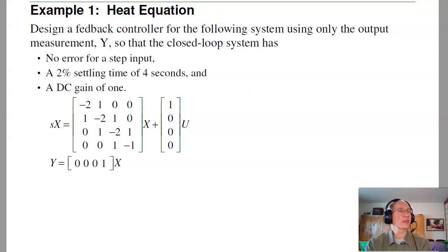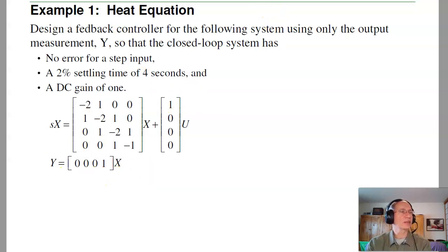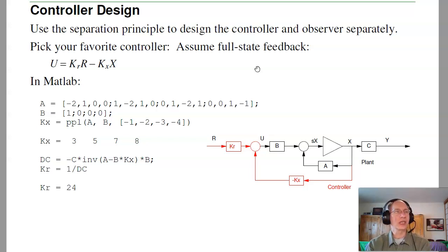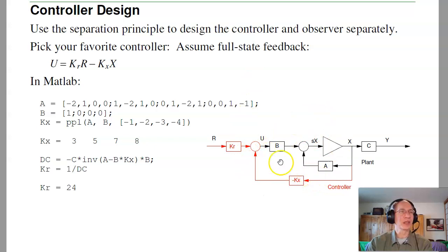Let's go through an example of the separation principle. We'll design a feedback controller for the heat equation — a 20-stage RC filter — with no error for step input, a 2% settling time of 4 seconds, and a DC gain of 1. Here's my fourth-order model of the plant. First step: design the controller pretending all the states are measured. Use u = -K_x·x + K_r·r, pick K_x to place the dominant pole at -1, with the other three poles at -2, -3, -4, and make the DC gain 1 with K_r.